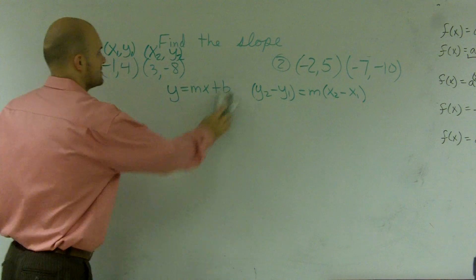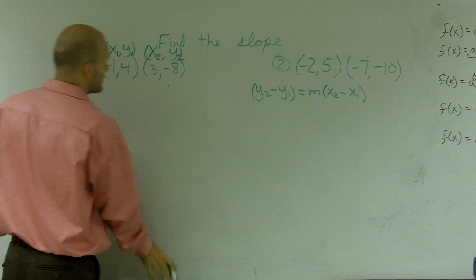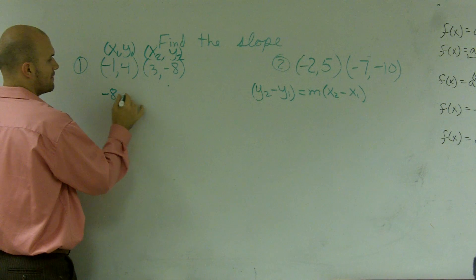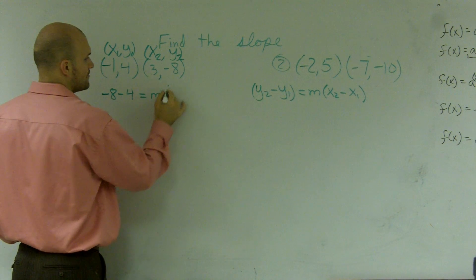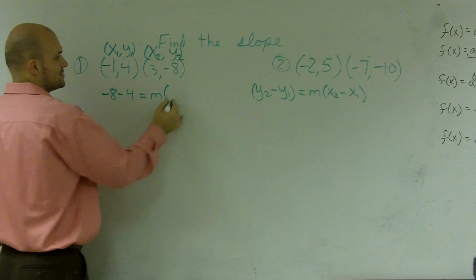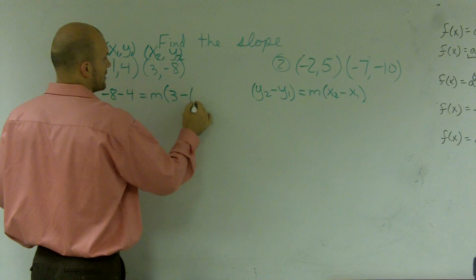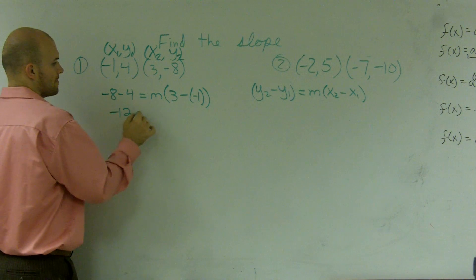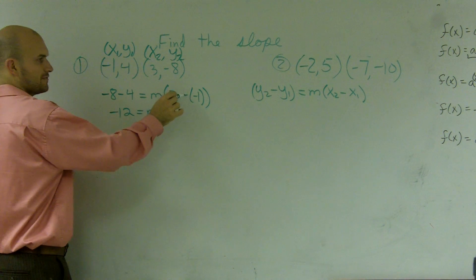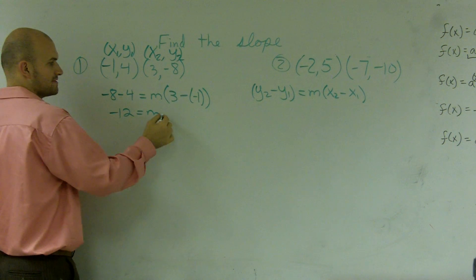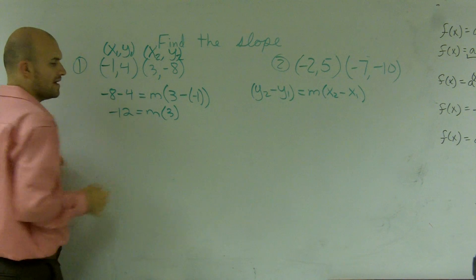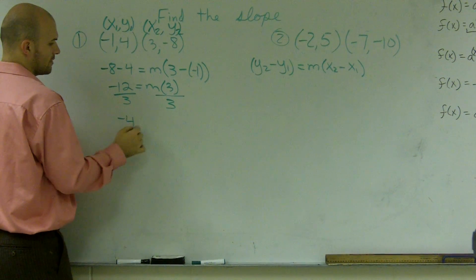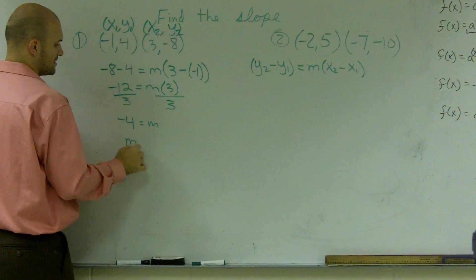Once you've done that, you can just plug it into your formula. So y2 is negative 8 minus y1, which is 4, equals m — which we do not know — times x2, which is 3, minus x1, which is negative 1. Therefore, negative 8 minus 4 is negative 12, equals m times 3 minus negative 1, which becomes positive 3. Then, to solve for m, I divide by 3, and I get negative 4 equals m, or m equals negative 4.